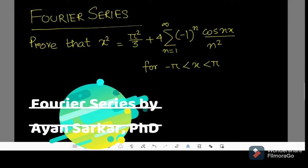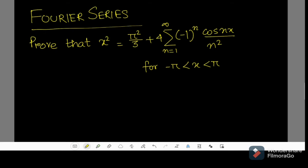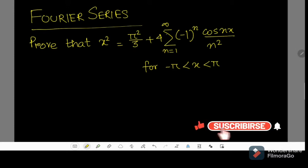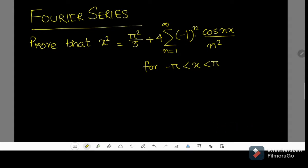Hello and welcome to my channel once again. Today I will solve one problem from Fourier series. Here is our problem: we have to prove that x squared is equal to pi squared by 3 plus 4 times the summation from n equal to 1 to infinity of minus 1 to the power n, times cos(nx) by n squared, for this limit.